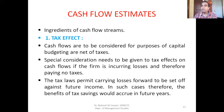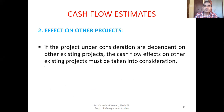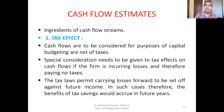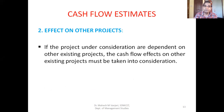The tax laws permit carrying losses forward to be set off against future income, so losses can be carried forward against future income. That is why even a loss-making firm will not be closed. In such cases, the benefits of tax savings would accrue in future years. That is the first ingredient — tax and its effect on cash flow streams.